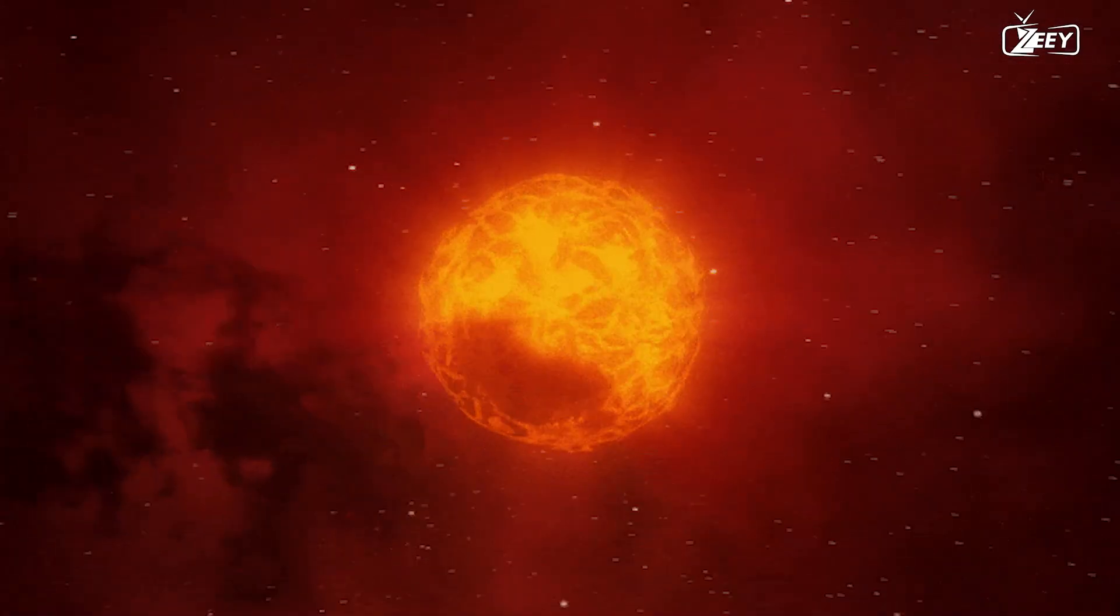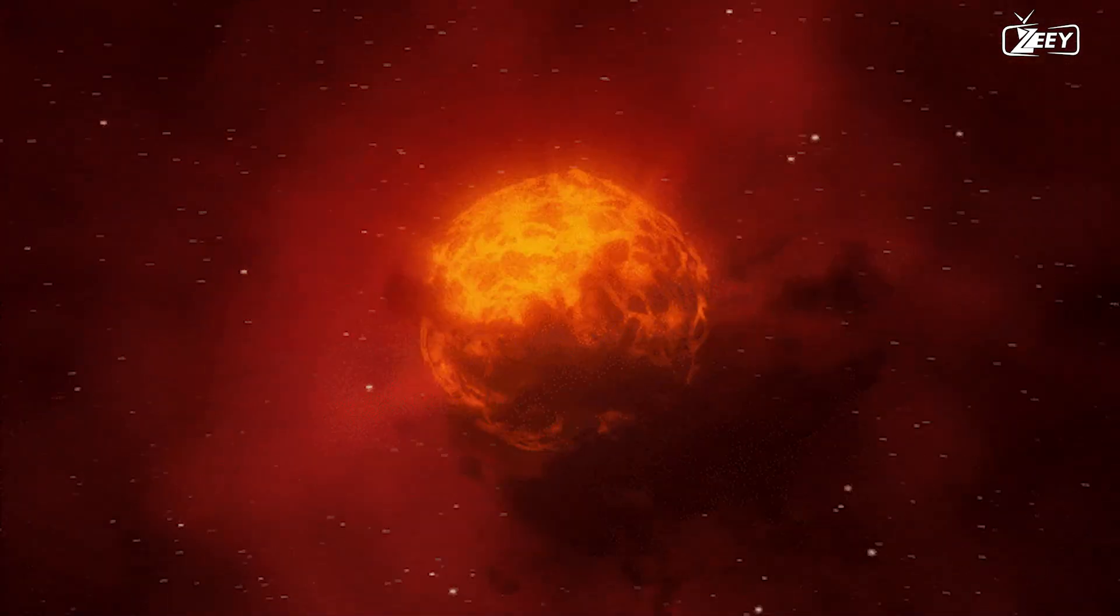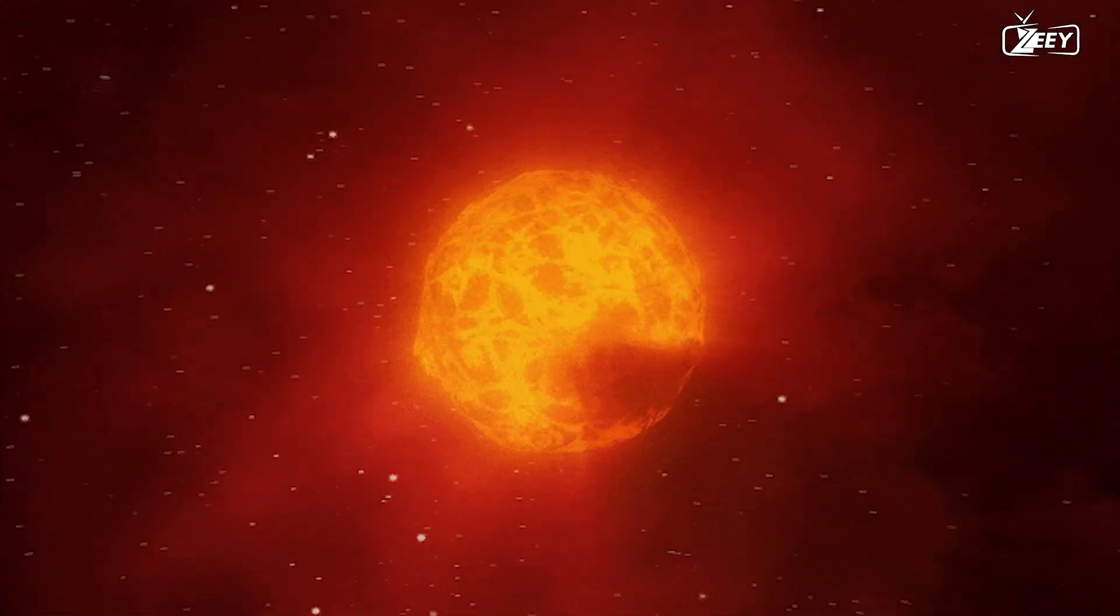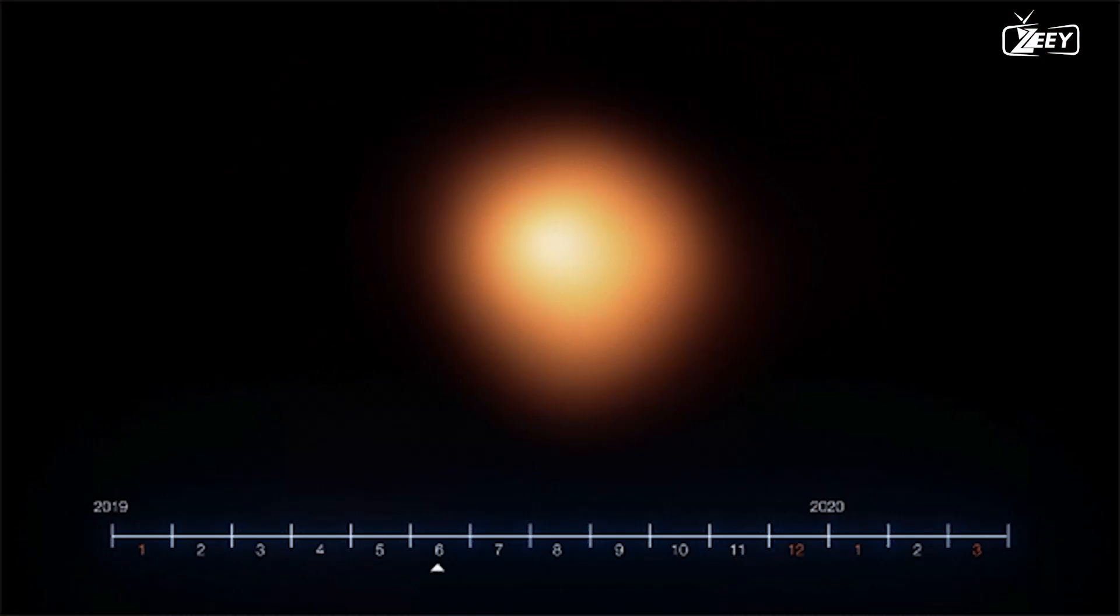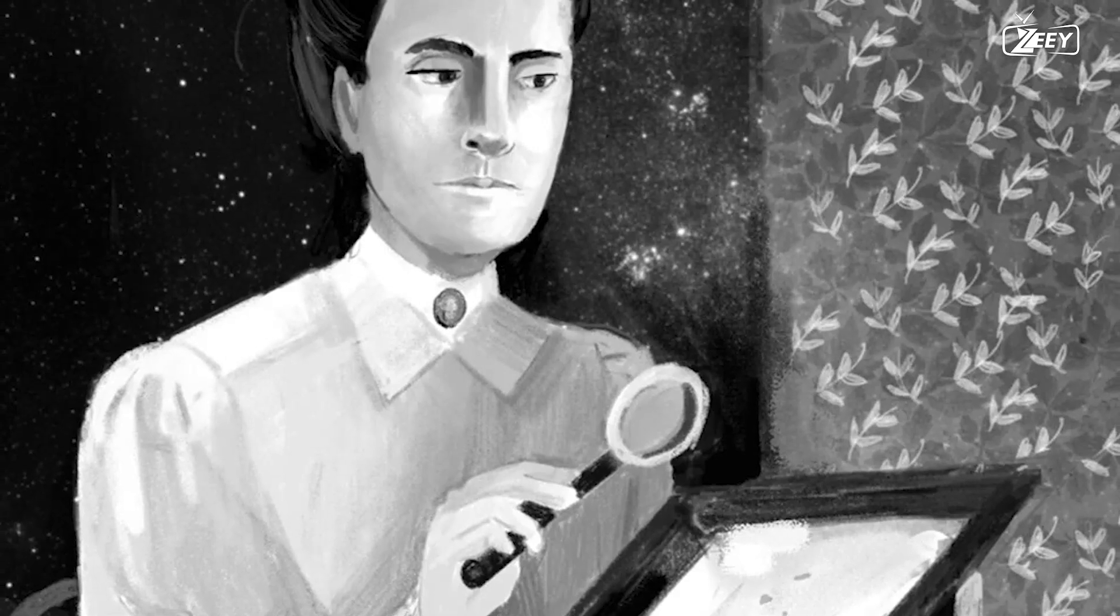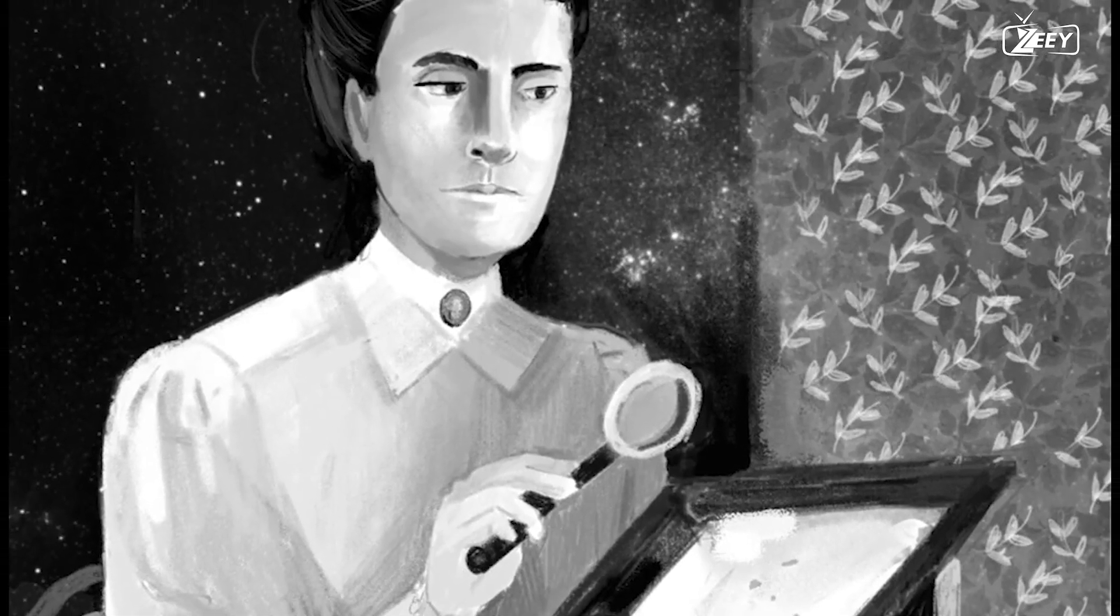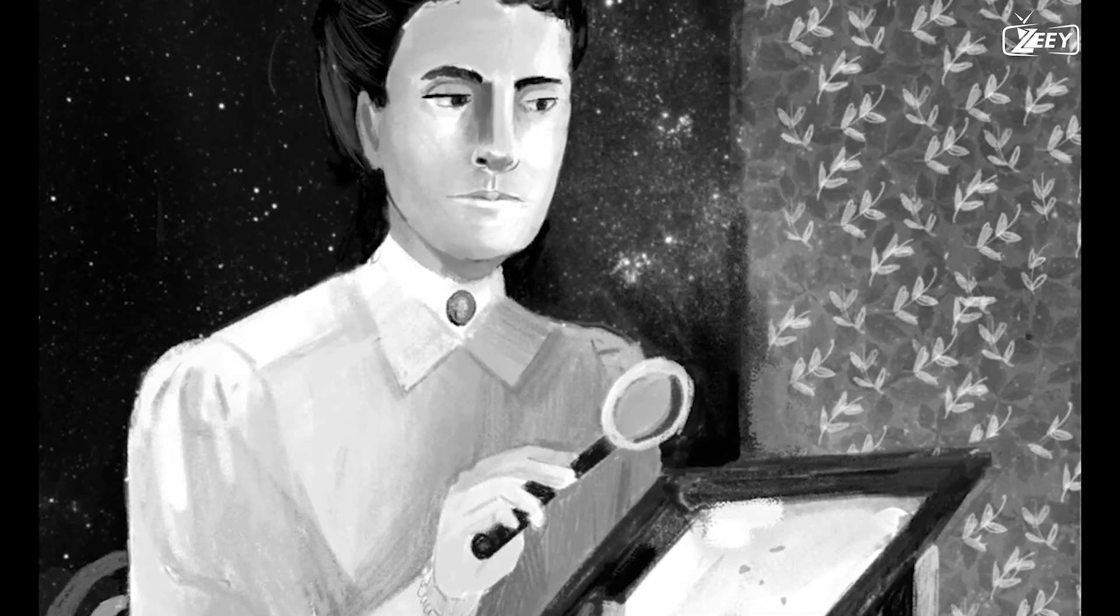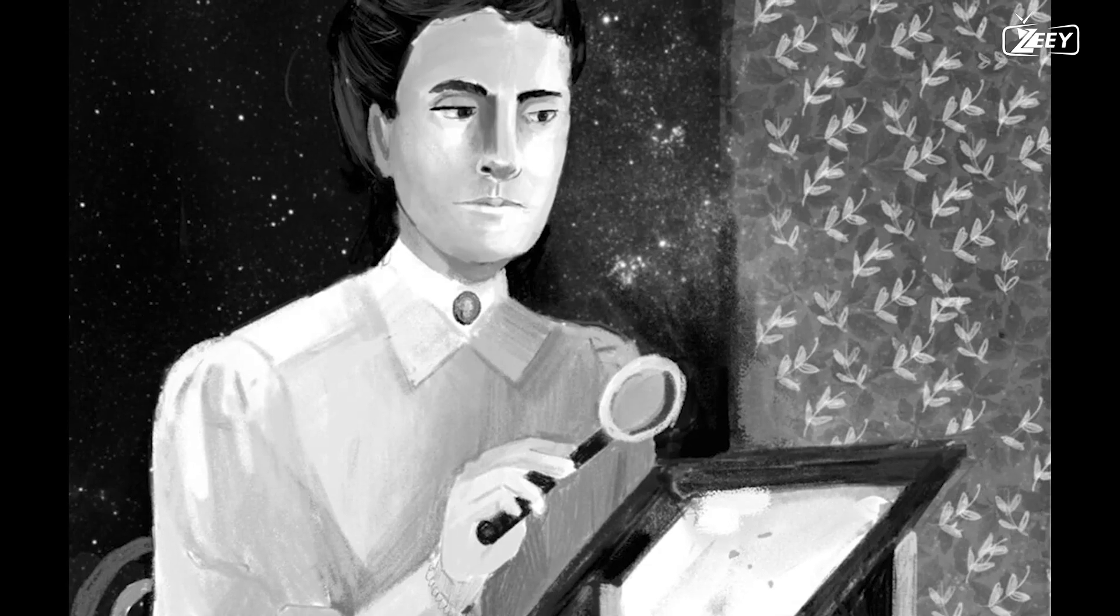Leavitt's research focused on Cepheid variables, an unusual form of star. These stars have a peculiar property, they pulse, brightening and dimming at regular intervals. Leavitt's job at the Harvard College Observatory involved cataloging these stars, a duty that led her to a groundbreaking discovery.